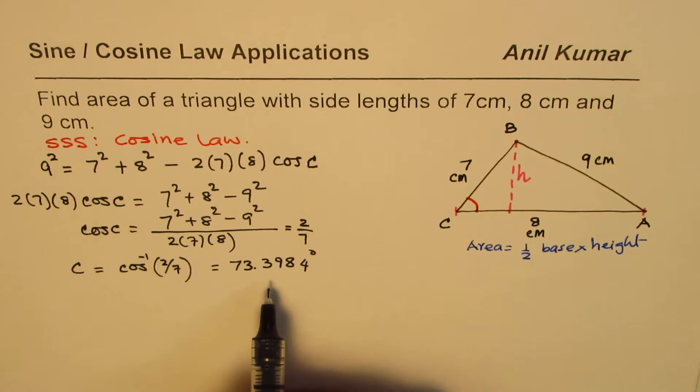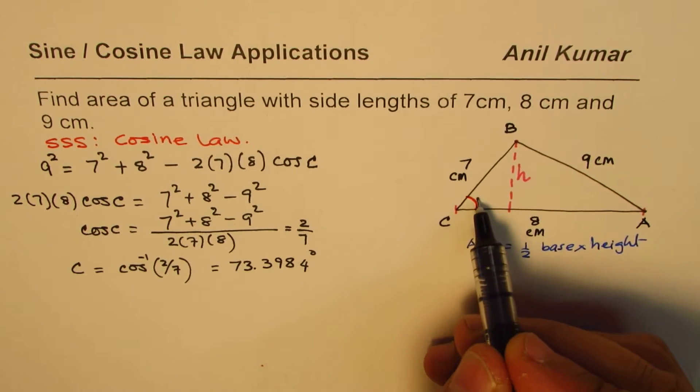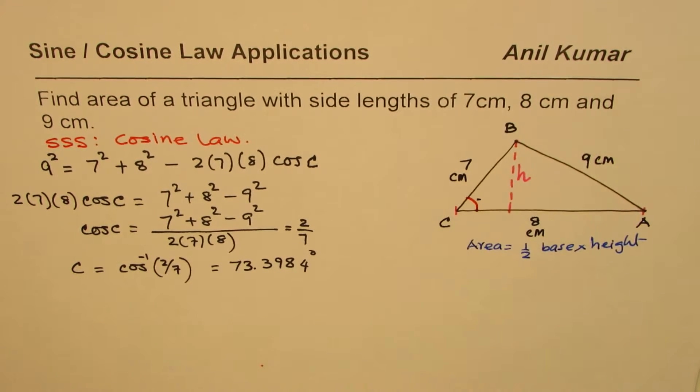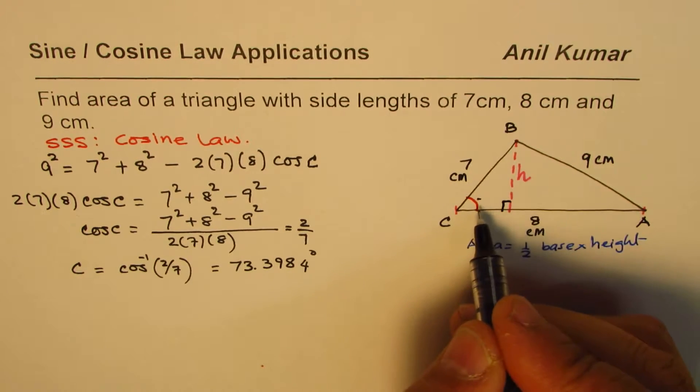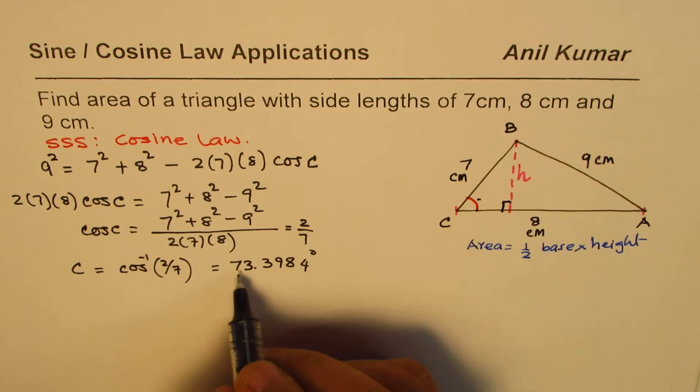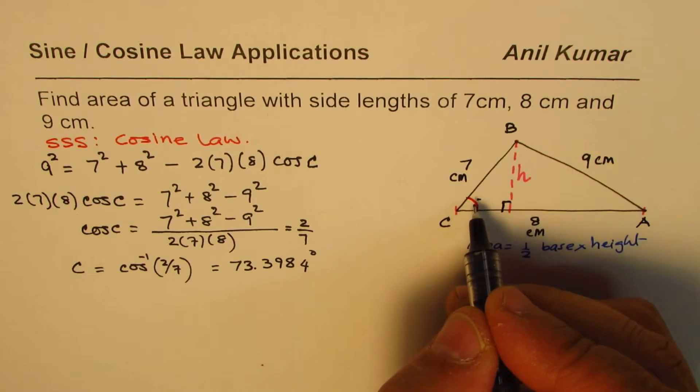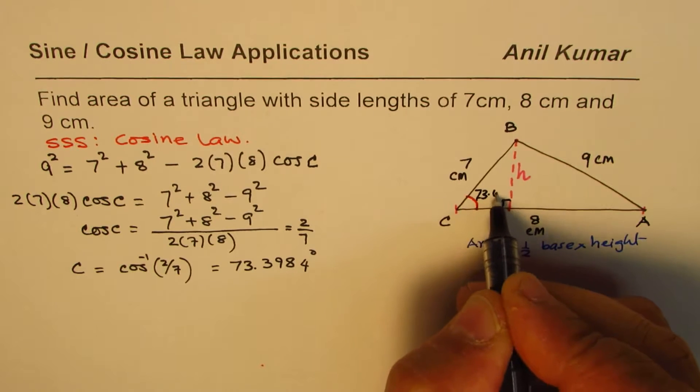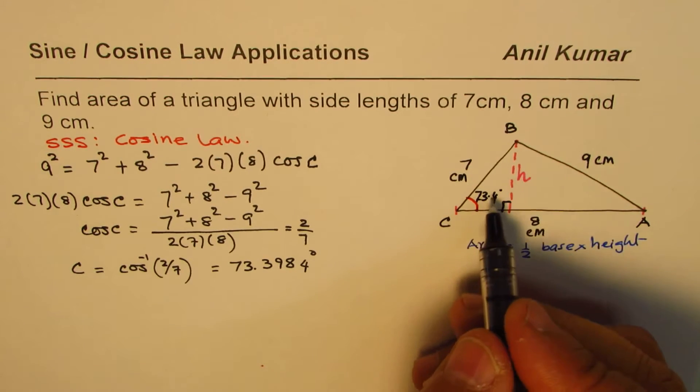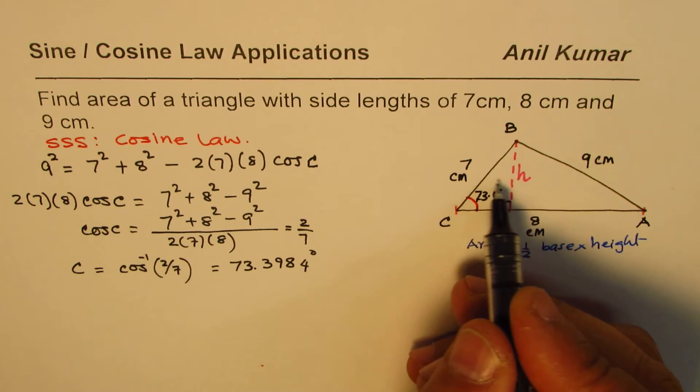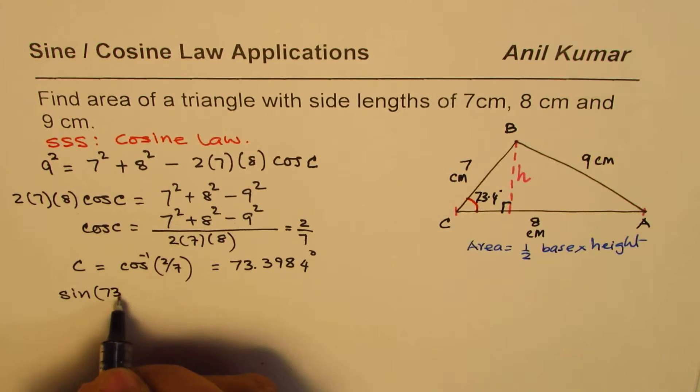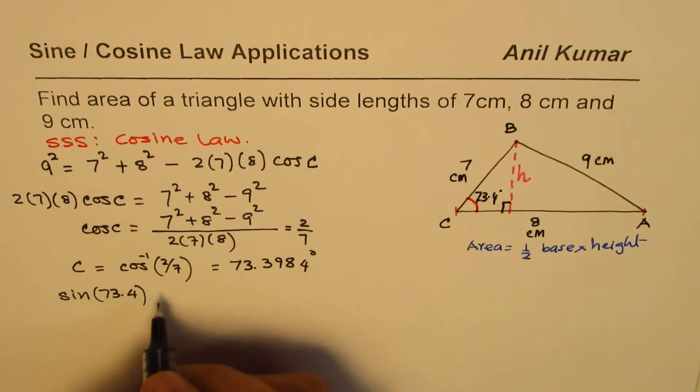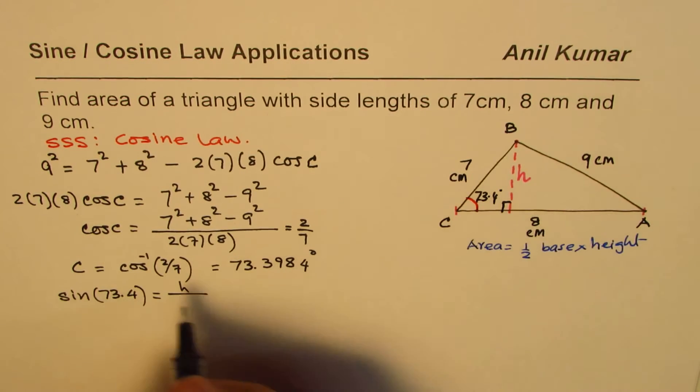Now from this can you find the height? It's simple, right? Now this is a right triangle, so you need to find the height. You know this angle which seems to be 73 degrees. So let me write this as 73.4 degrees. So opposite side and hypotenuse remind us of sine. So we have sin(73.4°) equals height divided by the opposite side which is 7.